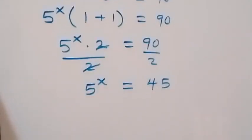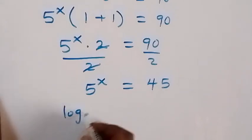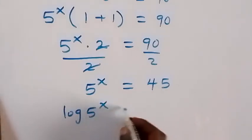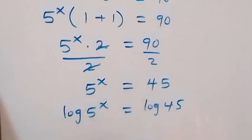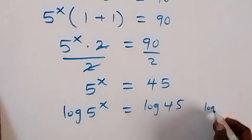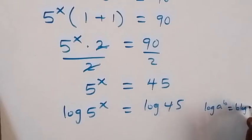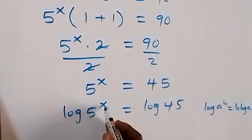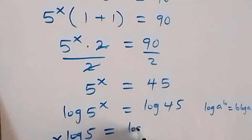Next we take the log on both sides: log of 5 raised to power x equals log 45. From the law of logarithms, log a raised to power b is the same as b times log a. Applying this gives us x log 5 equals log 45.